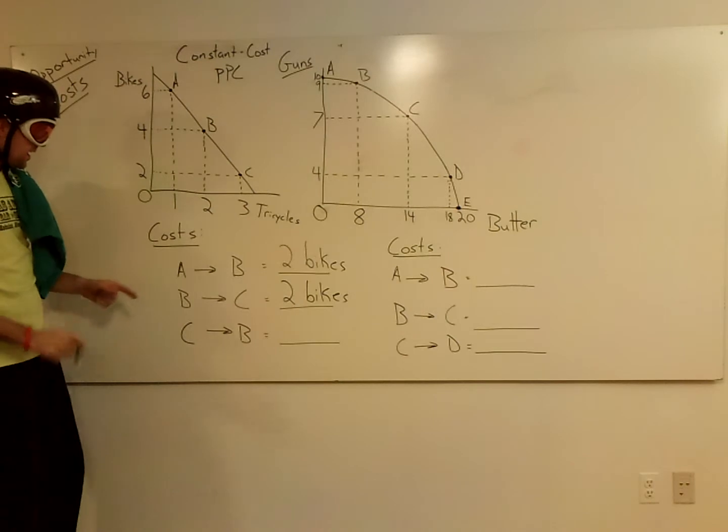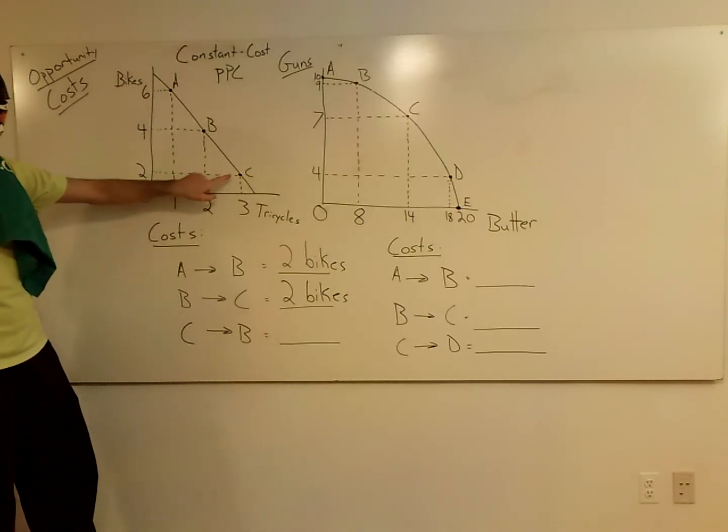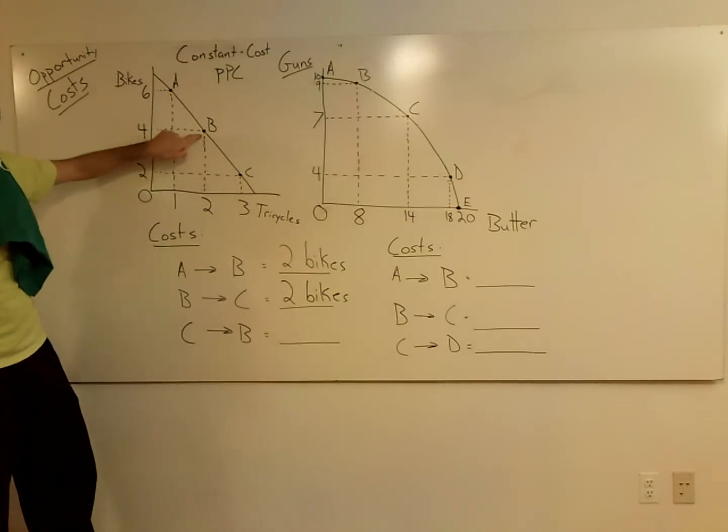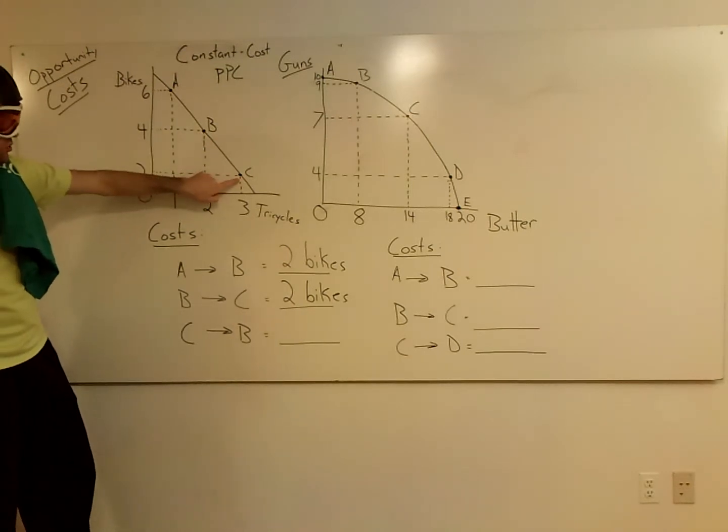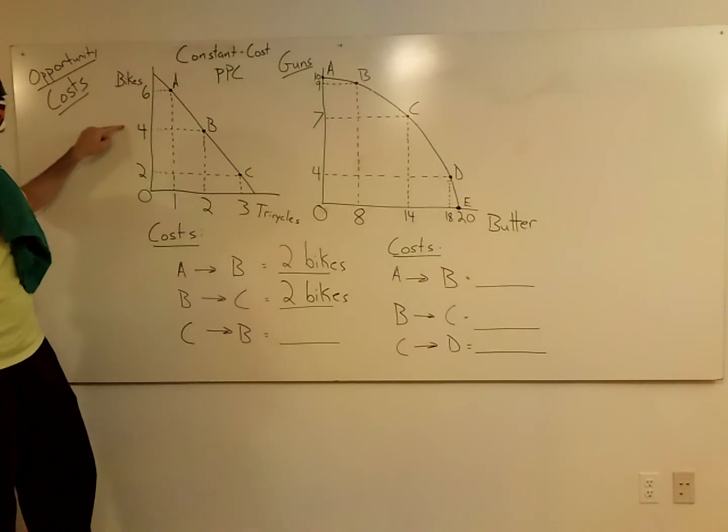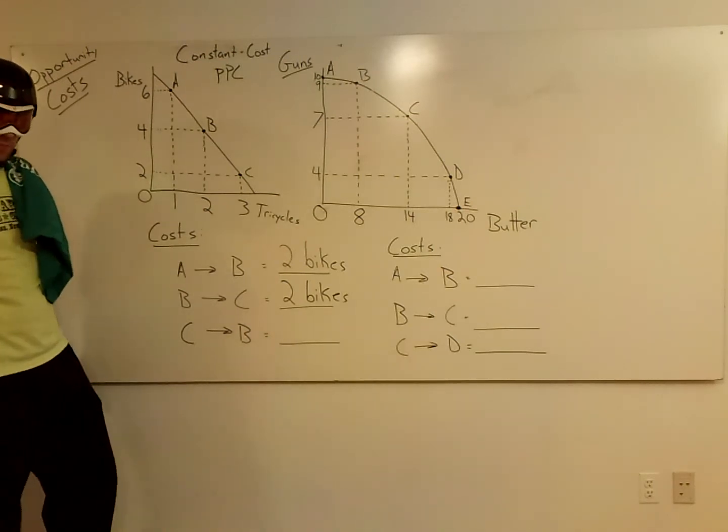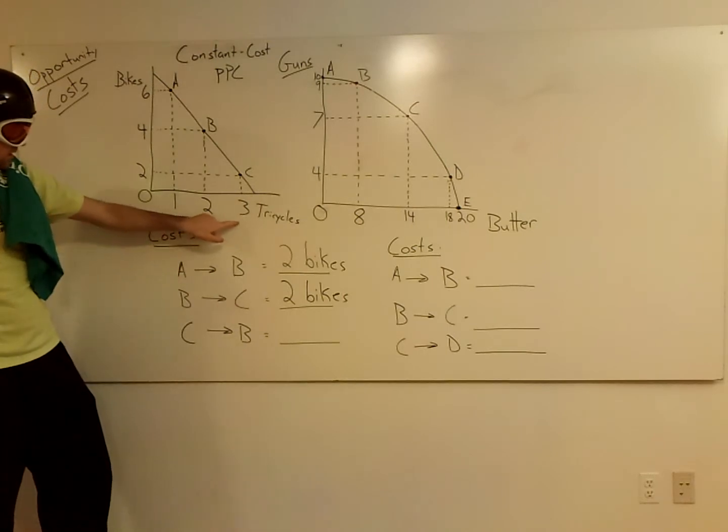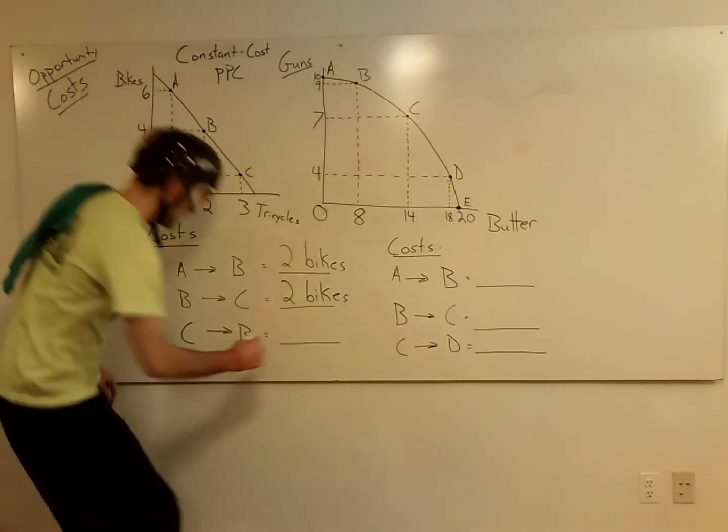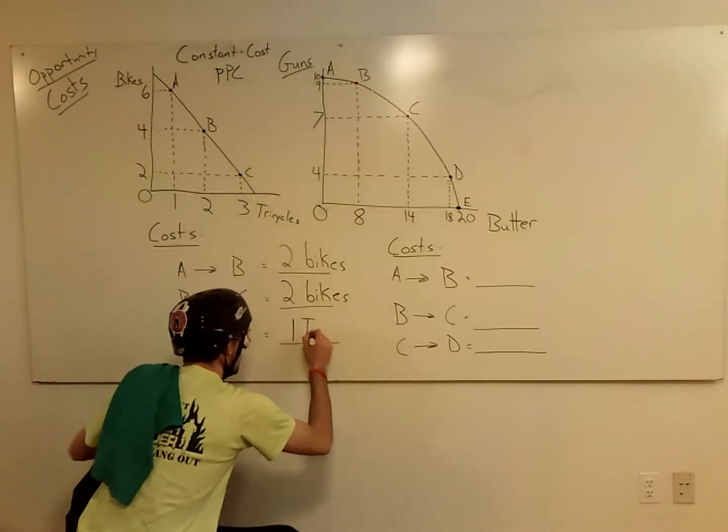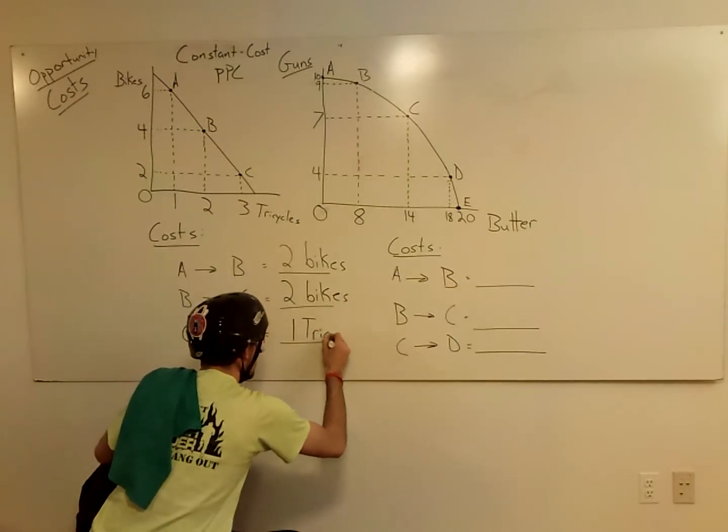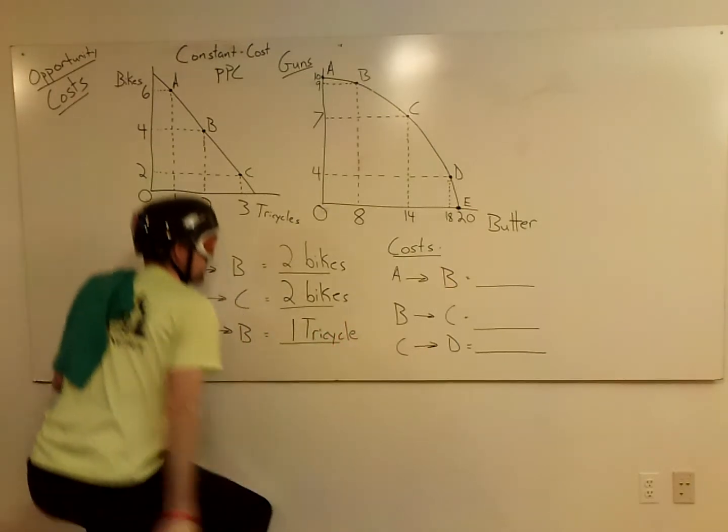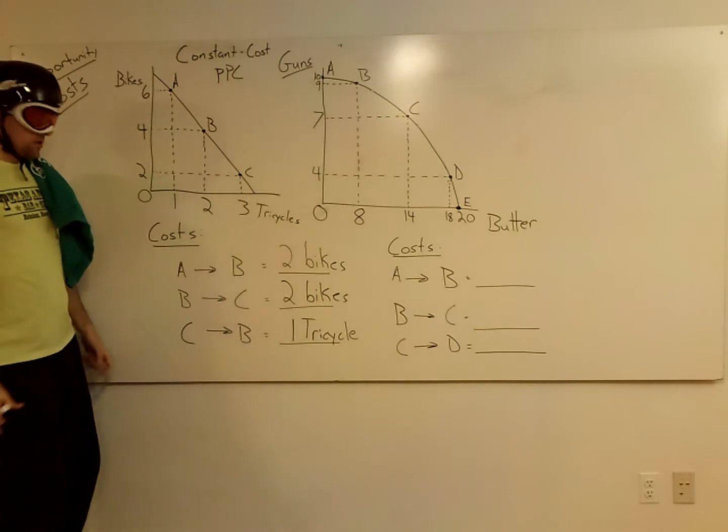Now if you switch it here and you go instead from C to B, now we're choosing to make more bicycles. We go from making two bicycles to making four bicycles. We had to give something up to be able to do that. We gave up one tricycle.